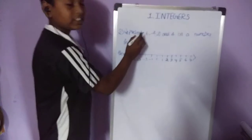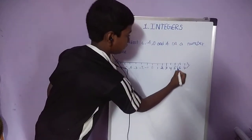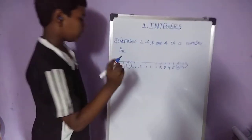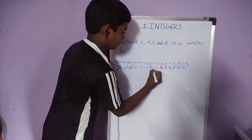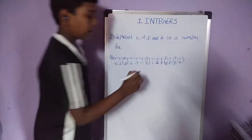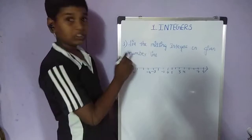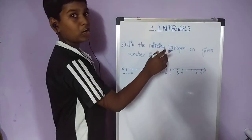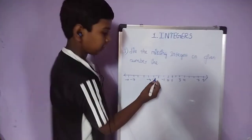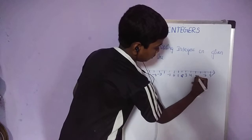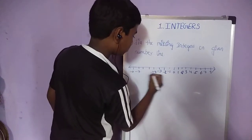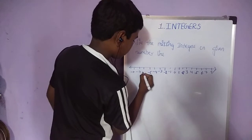First we take 6, second minus 4, third 0, fourth 4. So we have to mark these on the number line. Next question: fill in the missing integers on the given number line. We go to 2, 5, 6, minus 2, minus 5, minus 6.